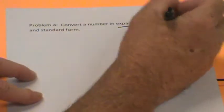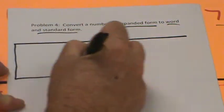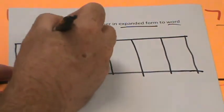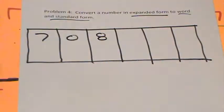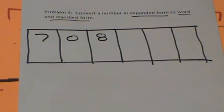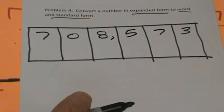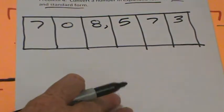Problem four: convert a number in expanded form to word and standard form. We're going to take this number and make a place value chart — six columns again: one, two, three, four, five, and six. The number is seven hundred eight thousand, five hundred seventy-three. We put the comma in: one, two, three. Comma!